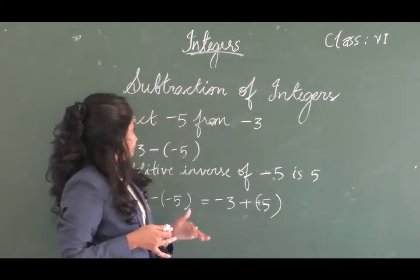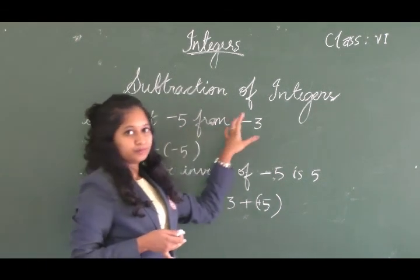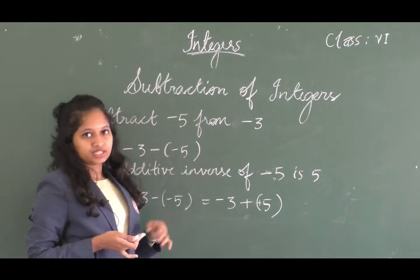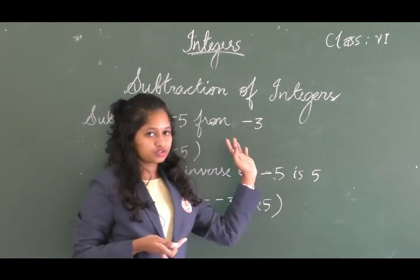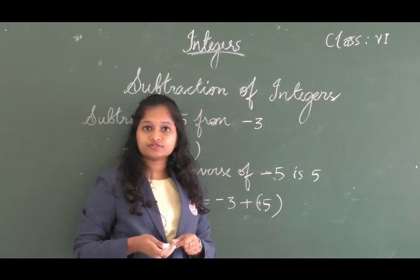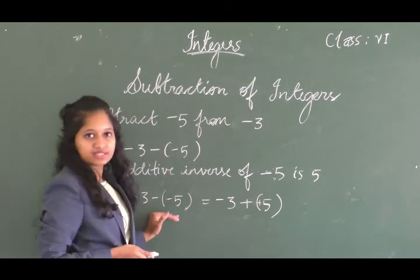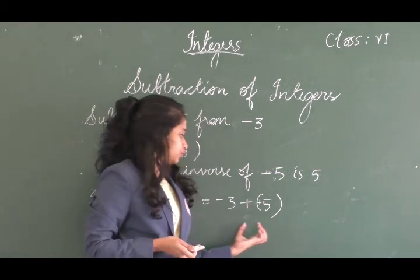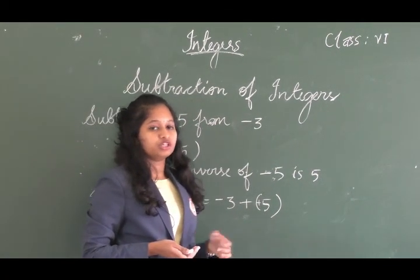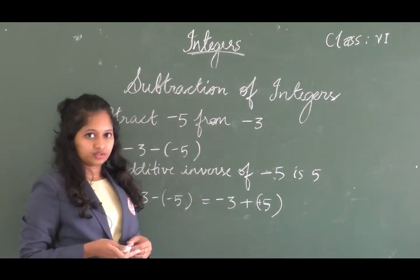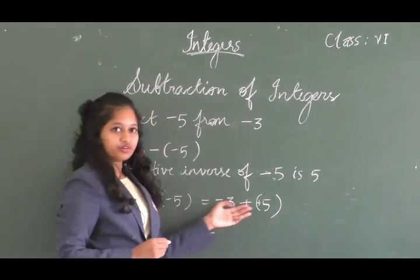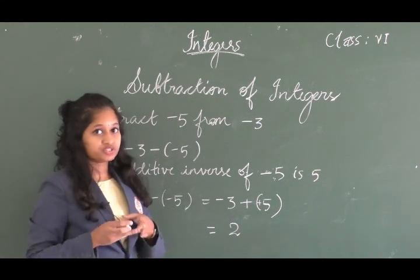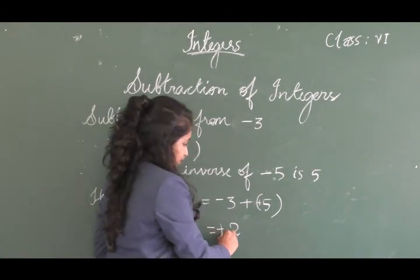Another example: subtract minus 5 from minus 3. Write it as minus 3 minus (minus 5). The additive inverse of minus 5 is plus 5, so this becomes minus 3 plus 5. The signs are different, so find the difference: 5 minus 3 is 2. Since 5 is greater and positive, the answer is plus 2.